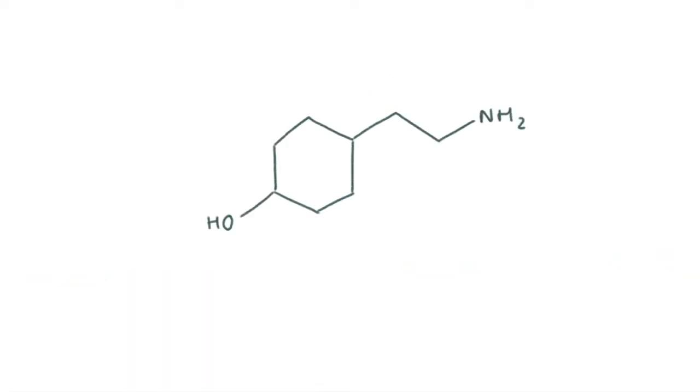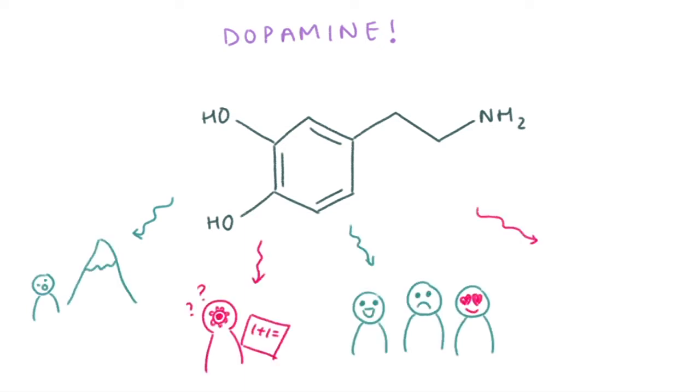Most people believe that schizophrenia is caused by abnormal dopamine activity in the brain. Dopamine is a neurotransmitter that is expressed in the central nervous system and regulates things like motivation, cognition, emotions, and the reward system.